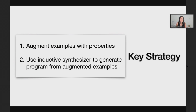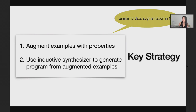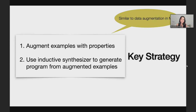Our key strategy is very simple for biasing the search: augment examples with properties and then use an existing inductive synthesizer to generate a program from these augmented examples — you're not even redesigning the synthesizer. This is similar to the idea of data augmentation in machine learning, where for learning an image classifier that generalizes better to unseen images, one generates a larger training dataset by applying various transformations to the original dataset. Ours is similar, but our domain and perturbations are different. For instance, we don't limit ourselves only to label-preserving transformations — we also support perturbations where the outputs can change with respect to input changes.